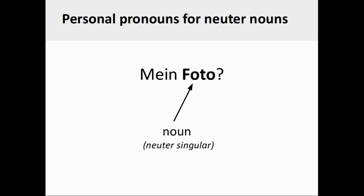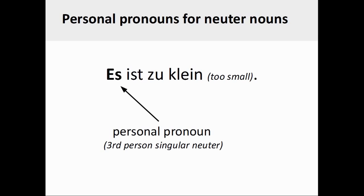The grammatical gender of the German noun Foto, or photograph, is neuter and the number of the noun is singular. If you were to see the definite article of the noun here, it would be das. Since Foto is a neuter singular noun, the matching personal pronoun to be used is es — neuter, third person singular.